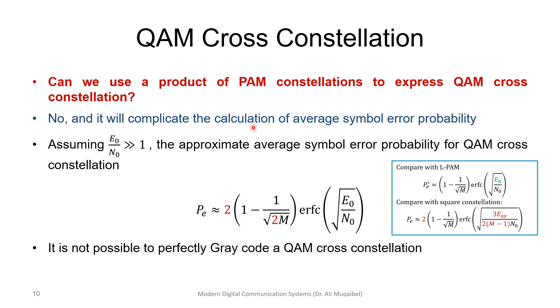You cannot generate the cross constellation from Cartesian product of a linear PAM. It will complicate the calculation of the average symbol error probability. If the signal-to-noise ratio is high, we can approximate the average symbol error rate for QAM cross-constellation.